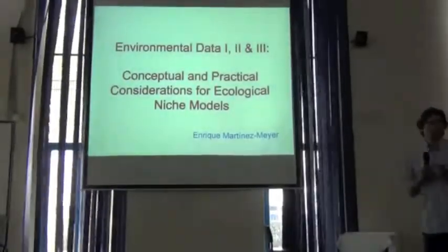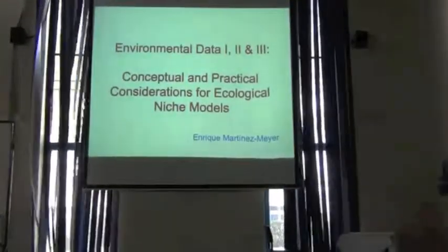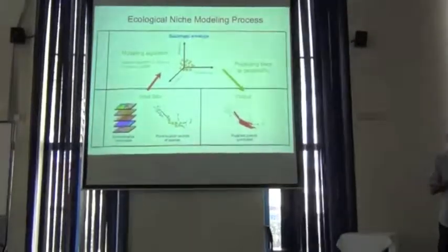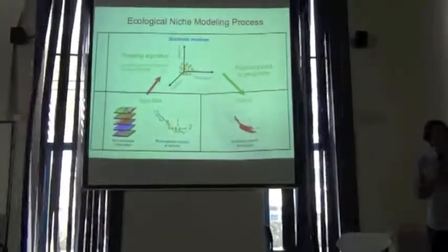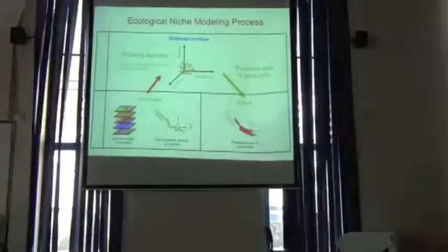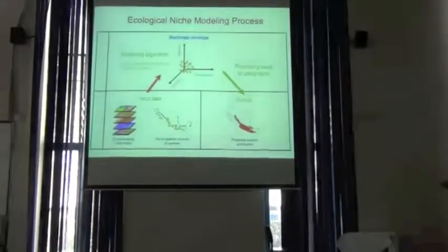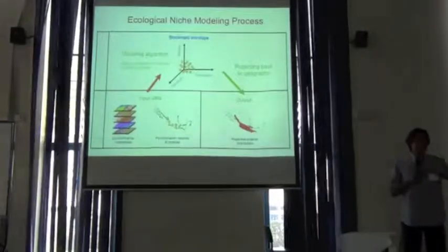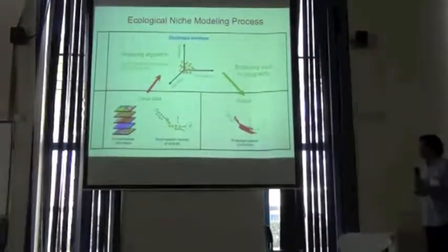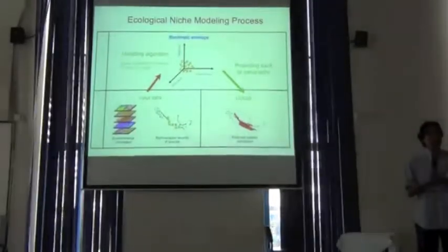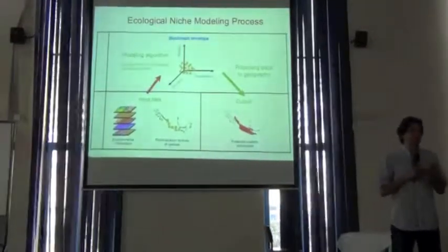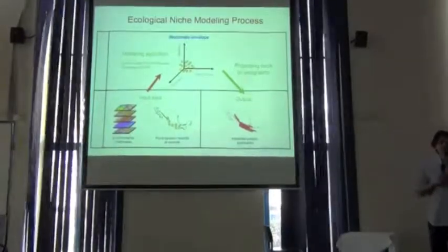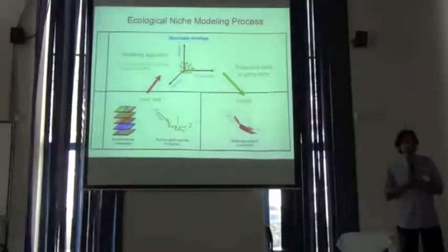The next topic covers the conceptual and practical considerations of environmental data. This illustration summarizes the process of the ecological niche model. We start with two sources of primary information as input data: the species occurrence sources we have been discussing earlier, and a set of environmental layers representing environmental variables that we know or assume have an effect on the physiology and ultimately on the distribution of species. Recall what Tom and Richard told us about the concepts of the niche.